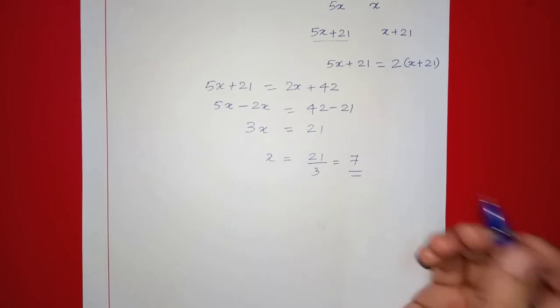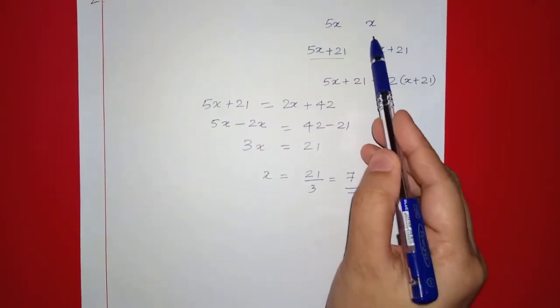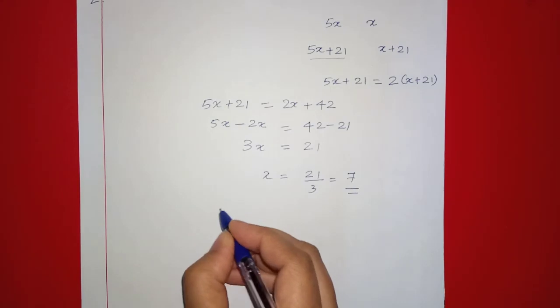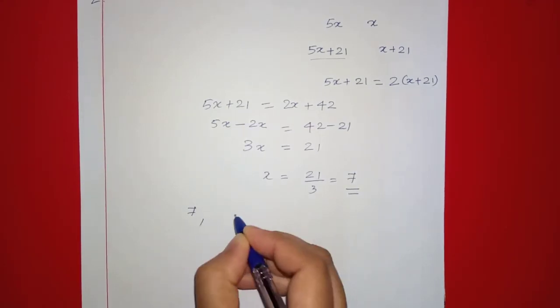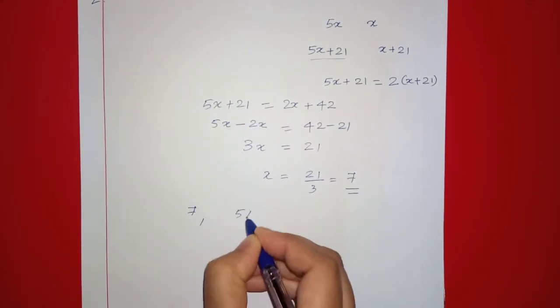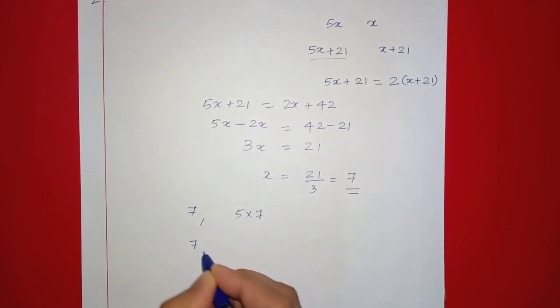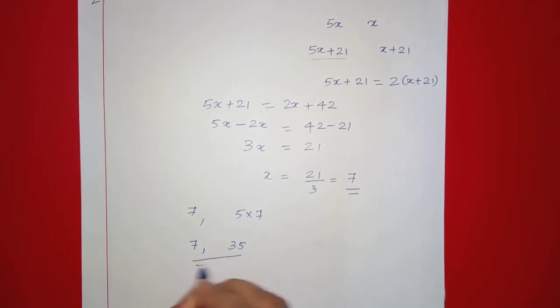The value of x is 7. We have two numbers: x equals 7 and 5x equals 5 into 7, which is 35. So the two numbers are 7 and 35.